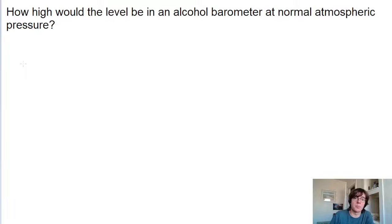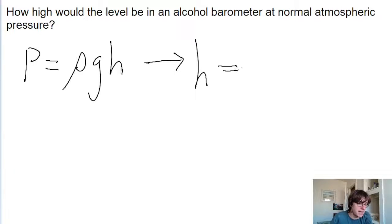So the formula for the pressure difference between two altitudes in fluids is that the pressure is equal to the density of the fluid times the gravitational acceleration g times the height difference. And this height difference is what the problem is asking us to find. So let's algebraically solve this equation for h by dividing both sides of the equation by ρg.